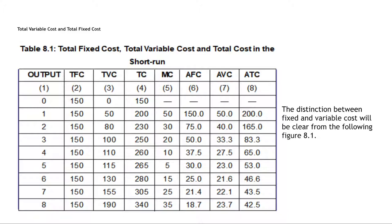When output is 2, total fixed cost is 150 — it remains the same. Total variable cost is 80, thus total cost is 230. Marginal cost in this case is 30. Average fixed cost is 75, average variable cost is 40, and average total cost is 115. Accordingly, you can see the different values of TFC, TVC, TC, marginal cost, AFC, AVC, and ATC at different levels of output.